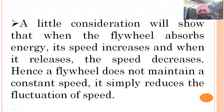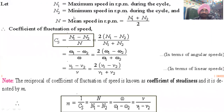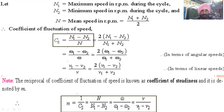When the flywheel absorbs energy its speed increases, and when it releases energy its speed decreases — this is how it reduces fluctuation of speed. In rotational terms, Cs equals omega1 minus omega2 divided by omega, or in linear terms, v1 minus v2 divided by v. The coefficient of steadiness is the reciprocal of the coefficient of fluctuation of speed: one divided by Cs, or n divided by (n1 minus n2).